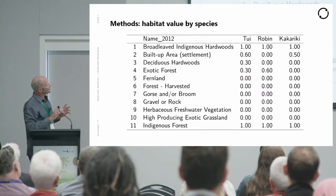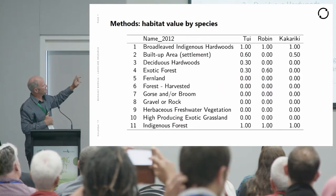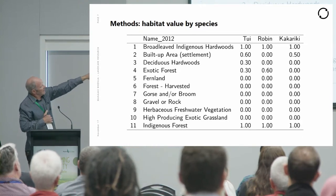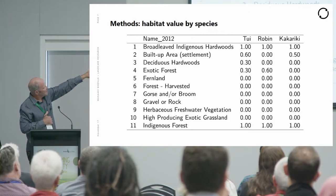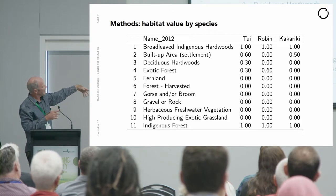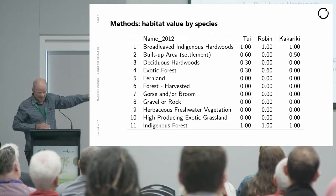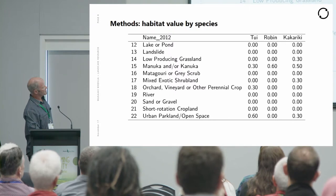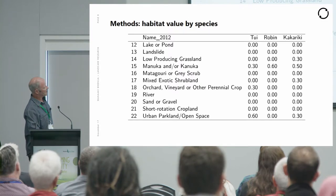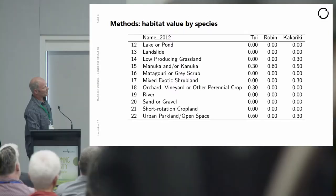LCDB4 habitat categories were ranked for quality for Tui, Robin, and Kakariki. All three species love broadleaf indigenous hardwood forest. Indigenous forest is also highly valued. Moving down the list: Manuka, Kanuka, successional scrub — Tui use these to some extent, Robin to some extent, and Kakariki as well. This ranking is based on expert opinion.